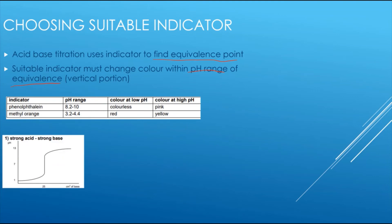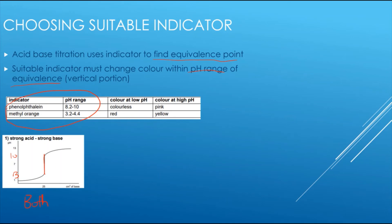For a strong acid and strong base titration, the vertical portion spans roughly pH 3 to pH 10. Looking at both phenolphthalein and methyl orange, both of their colour-change ranges fall within that vertical portion, so both indicators are suitable for a strong acid–strong base titration.